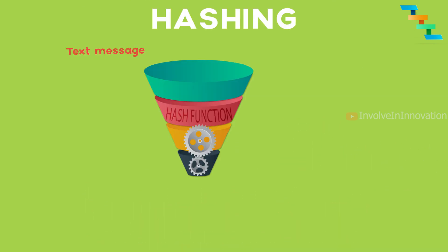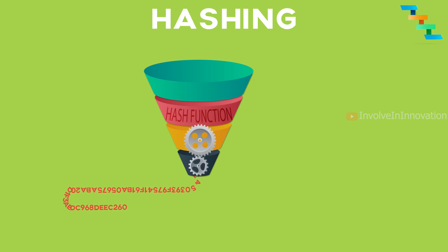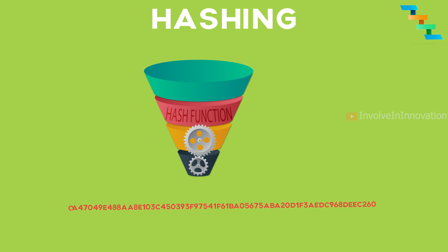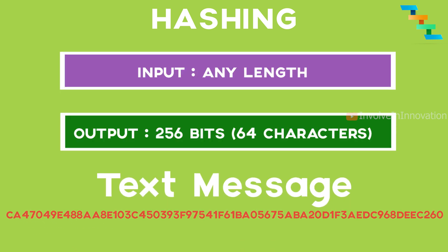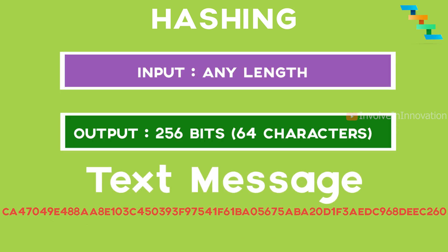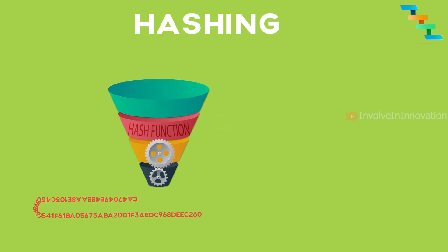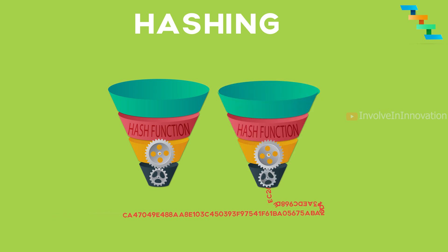In layman's terms, hashing means taking an input string or input value, which can be of any length, and feeding it to the hash function, which always produces a fixed length string as output. Hashing is a one-way compression function — we can't get the input string from the hash function output. That is, the hash value can't be reversed to produce the input string.